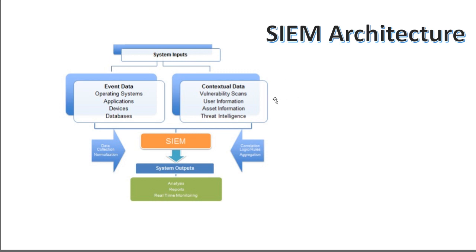At the same time, SIEM receives information from other sources like vulnerability scans, asset information, or threat sources to enrich that data, make more sense of it, correlate it in a better way, and present it back to the security operations team. That's basically how SIEM solutions operate.